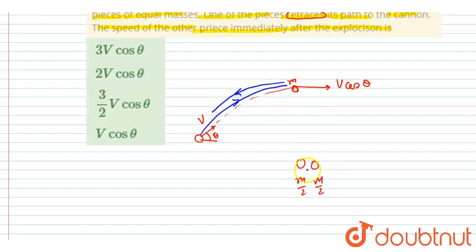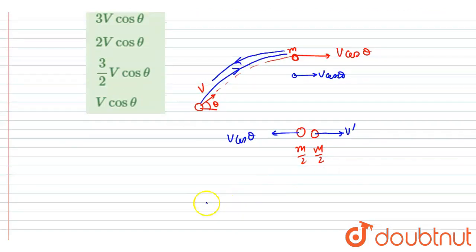Now how will this particle retrace its path? You can see the velocity was in this direction, v cos theta, so to retrace its path it should be having v cos theta in this direction. And this particle will have some velocity v dash, so we want this v dash. So